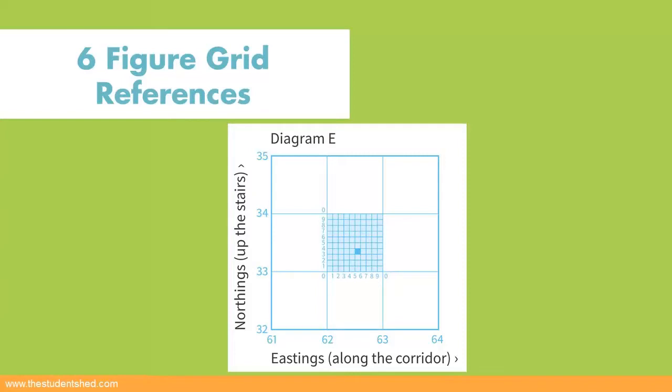The difference between the four and six-figure grid reference is that the four-figure grid reference has four numbers, and the six-figure grid reference has six numbers.